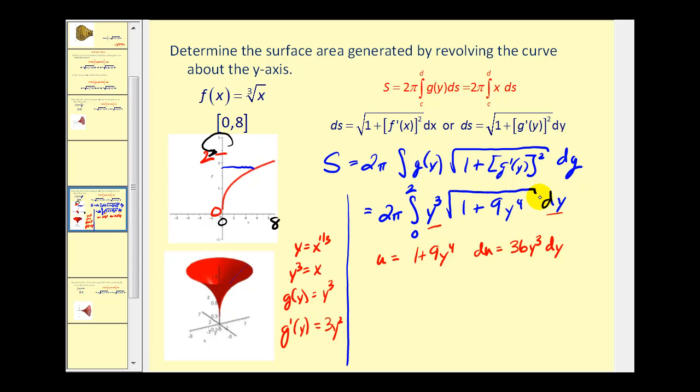Notice that our integrand contains y³ dy. For a perfect match, we divide both sides by 36. So u = 1 + 9y⁴, and (1/36)du = y³ dy.